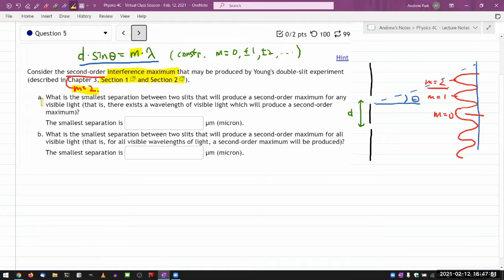The first part is asking: what is the smallest separation between two slits that will produce a second order maximum for any visible light?